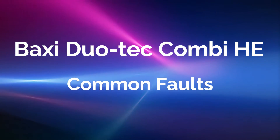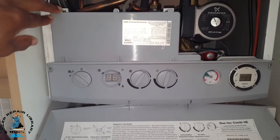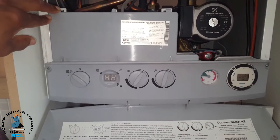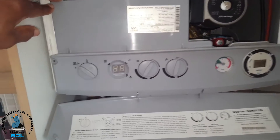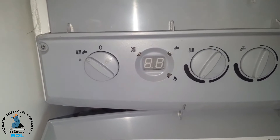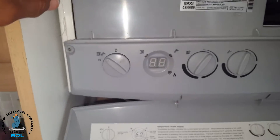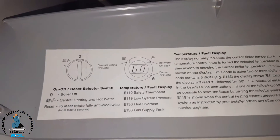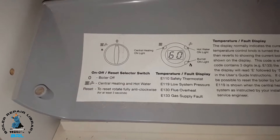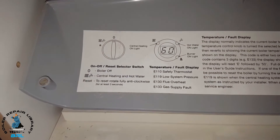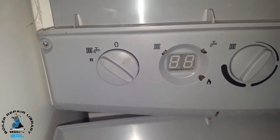The boiler we're going to be looking at today is the Baxi Geotec Combi 38, and we'll look at some common faults on this boiler. You can see the front panel, and this is where the display will show any faults found. This boiler has a fault-finding guide here and you can see the error codes that might show up, which will help you find common faults.